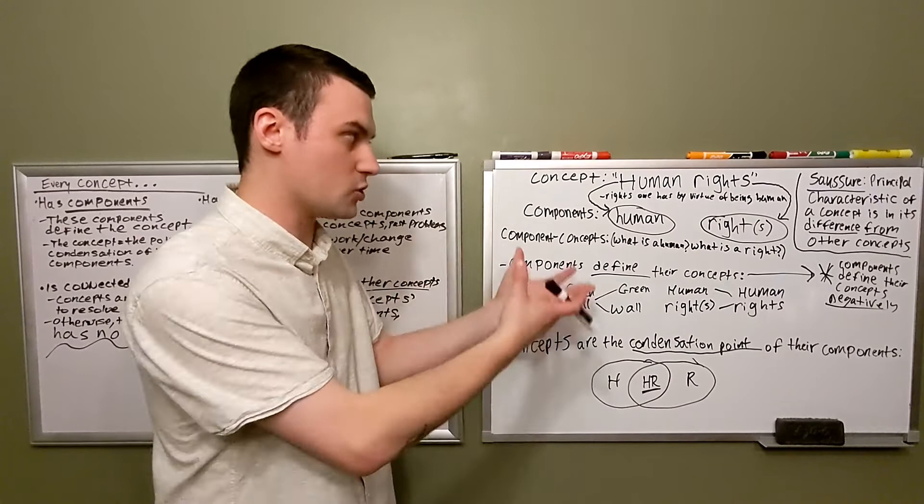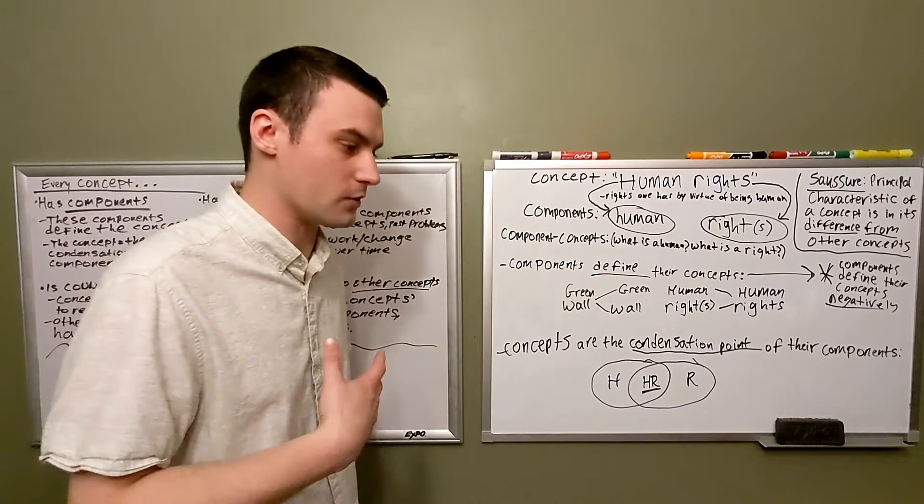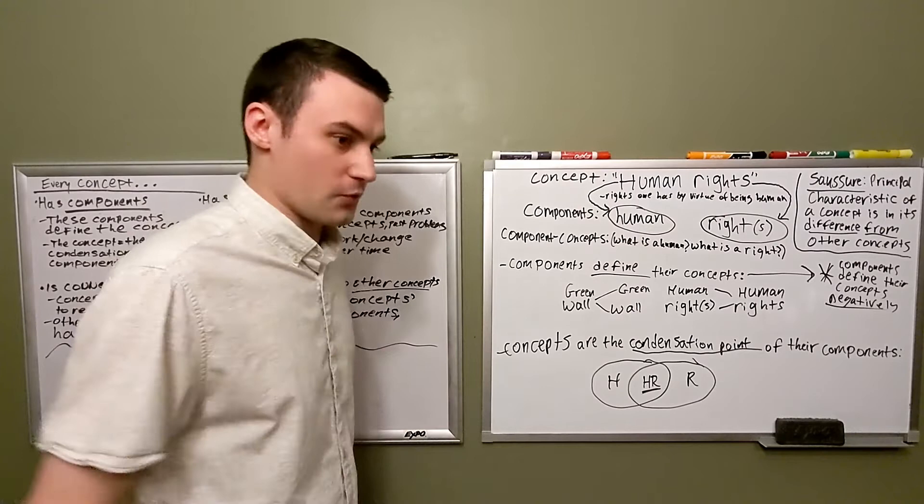What would we like to say the components of the concept of human rights would be? I think we have two. We have the component human, and we have the component right. But a good way to tell whether your components are also concepts is if you can ask the question, what is that thing? And if you can expect a relatively complex answer.